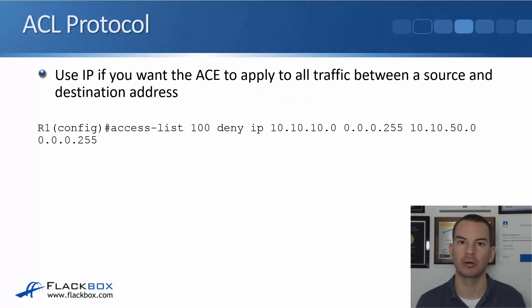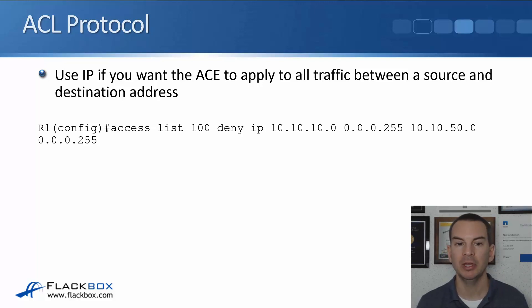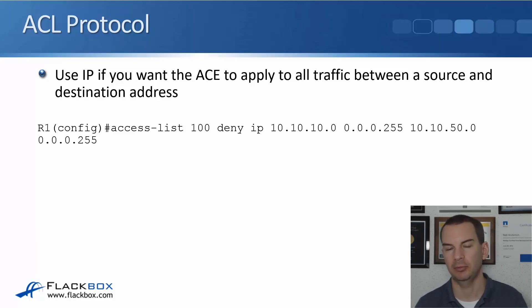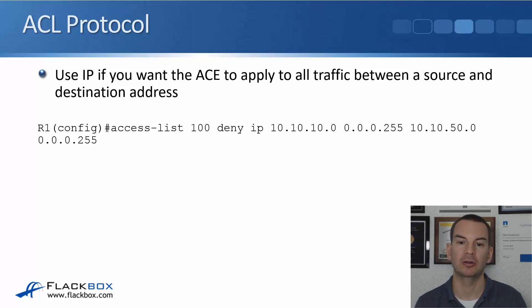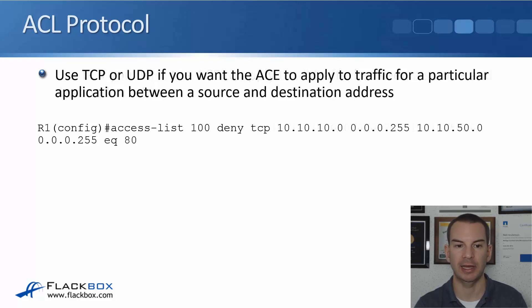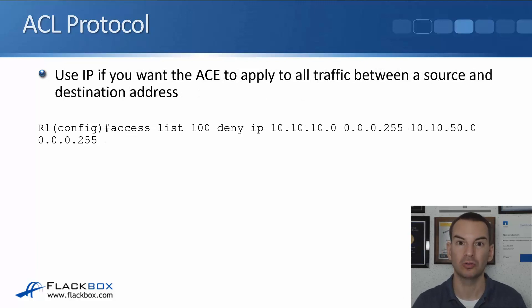One of the options for our protocols was also IP. So we've got TCP, we've got UDP, and there's also IP. Use IP if you want the ACE to apply to all traffic between a source and destination address — not a particular TCP or UDP application, but all IP traffic between these two parts of your network. An example would be: access list 100, deny IP from 10.10.10.0/24 going to 10.10.50.0/24. So compared to the first example using TCP for HTTP web traffic, this second example covers all traffic — we don't care about the application, so we use IP.